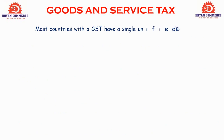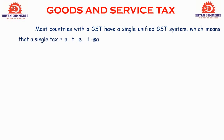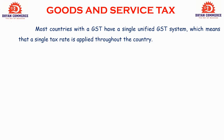Most countries with a GST have a single unified GST system, which means a single tax rate is applied throughout the country. Earlier, indirect taxes in Gujarat had different rates from those in Maharashtra or other states. But under GST, a single common tax rate applies across all states in the entire country — that is the unified GST system.